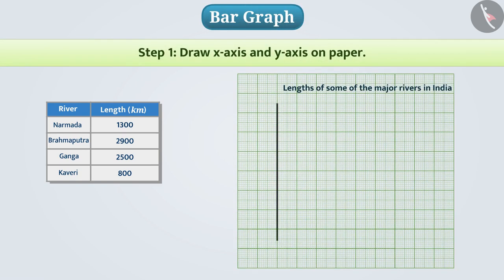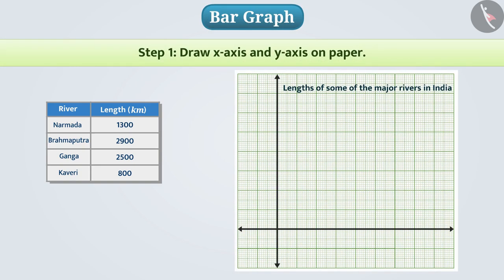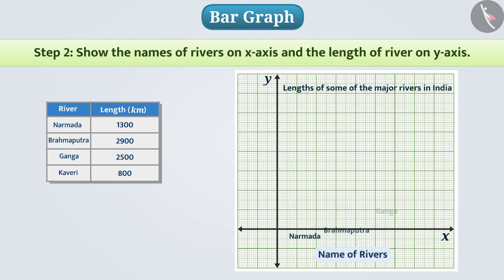Draw two mutually perpendicular lines on the paper. The horizontal line is the X axis and the vertical line is the Y axis. Now, we will show the names of the rivers on the X axis and the length of the river on the Y axis.